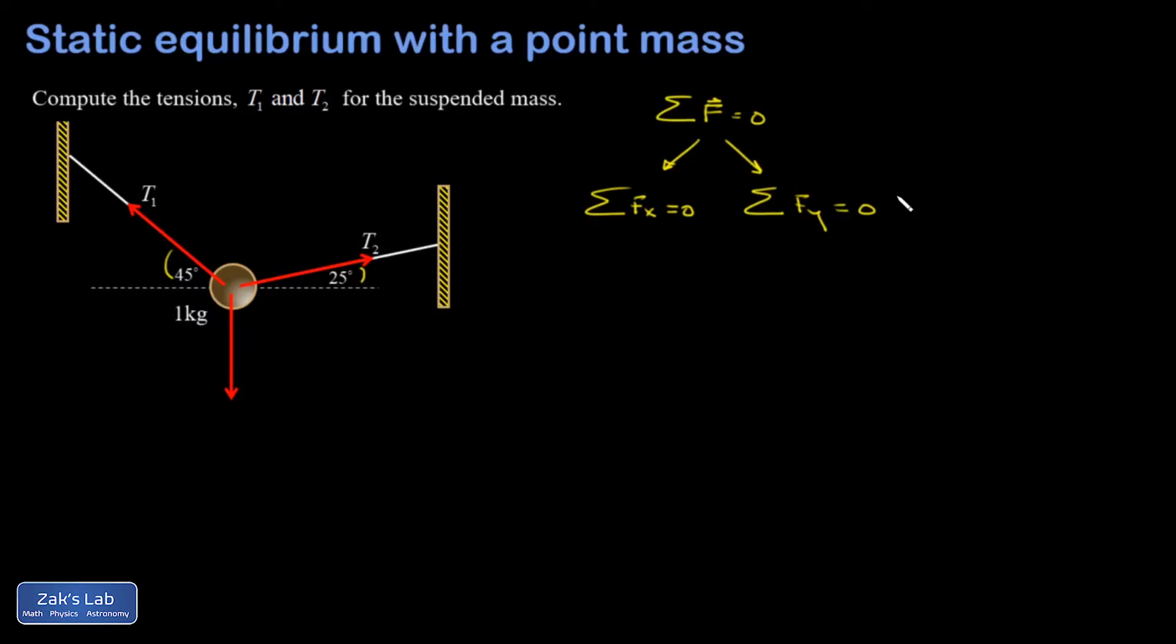Before I go ahead and write those equations down, I'm going to decompose these tilted vectors into horizontal and vertical components. So there's T2 horizontal, that would be T2 cosine 25. Here's T2 vertical, that's T2 sine 25.